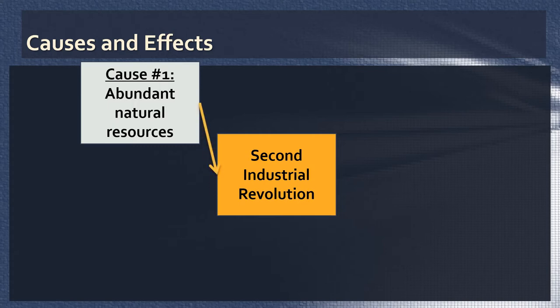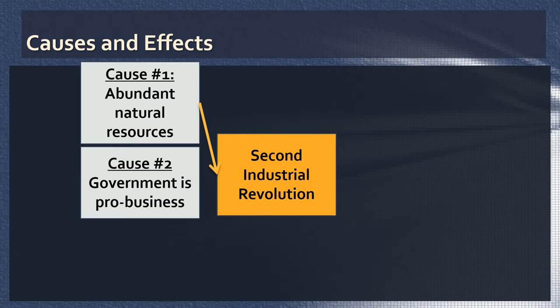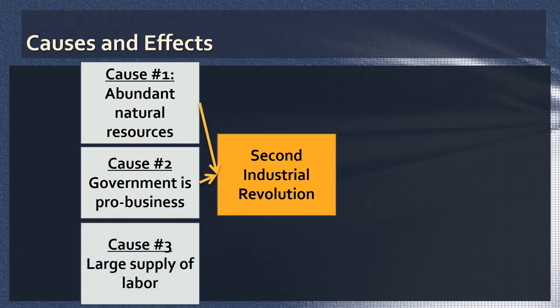The second cause: the United States government after the Civil War is very much in favor of business. The U.S. government takes positions, engages in actions, and passes laws that make America a pro-business climate — it encourages and supports business growth. Third, the United States has a large supply of labor. You can't make things without people doing the work. We have a lot of people willing to work, and we're getting more — millions of immigrants after the Civil War increase the labor supply.